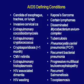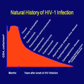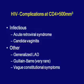At CD4 counts greater than 500, infectious presentations include acute retroviral syndrome or candida vaginitis. A female presenting with repeated candidal infections should prompt consideration of HIV. Other findings at elevated CD4 include generalized lymphadenopathy, Guillain-Barré, and vague constitutional symptoms. Between 200 and 500, complications include pneumococcal pneumonia, tuberculosis, herpes zoster, Kaposi's sarcoma, oropharyngeal candidiasis, cervical cancer, and lymphoma.